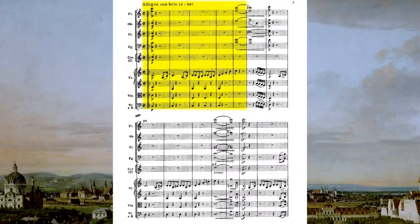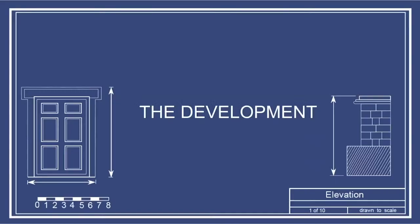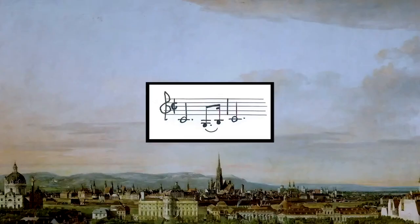It was standard practice to repeat the entire exposition so that the audience could hear all of the main materials again before plunging into the central development section, where Beethoven uses a device that's very common with composers, many of whom struggled with the process of true symphonic writing. It's taking a theme from the exposition.